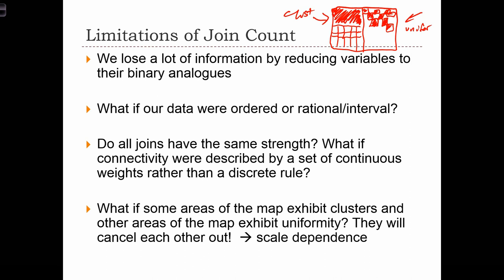When we compute the joint count statistic on this kind of map — considering the entire map as one — the observed black-white counts that are low on the clustering side and the observed black-white counts that are high on the checkerboard side, when we add them all together, they're basically going to cancel each other out. The joint count statistic is going to tell us that the map pattern is random, which is clearly not the case. There is a lot of structure in this map pattern.